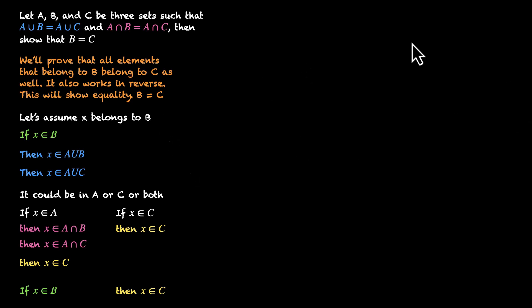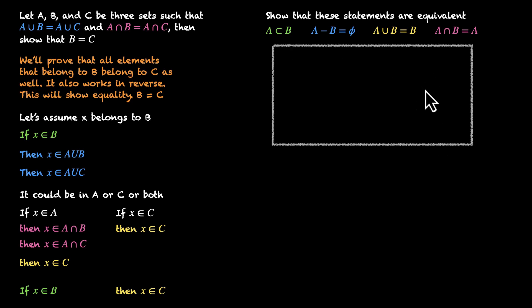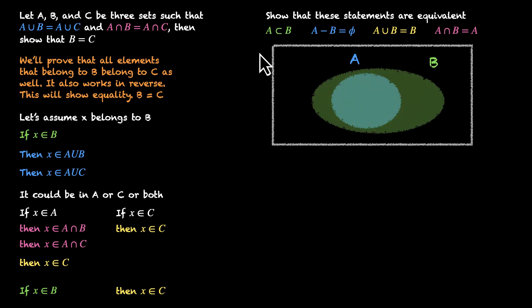Let's try some different types of proofs. Show that these four statements are equivalent — we have to show that all four mean the same thing. Let's try a visual approach. We make sets A and B; A is inside B, meaning A is a subset of B. If we can show the remaining three statements give the same picture, all four are equivalent.